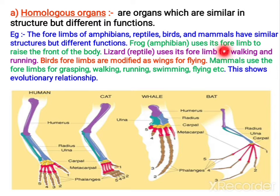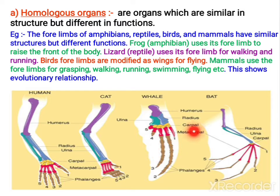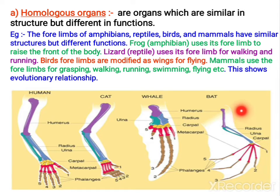But when you observe internally, all of them show the same type of skeletal system. For similar skeletal bones, they have given similar colors in the diagram. The purple color represents the humerus bone. Next, radius and ulna have been marked by light blue and dark blue color. Here also you can see it. Then the carpel bones — the wrist bones — are shown in light yellow color. And in red color, the metacarpals are shown. The phalanges — the finger bones — you can see in all of them. So maybe they are showing different functions, but internally they are similar. That type of organs you call homologous organs.